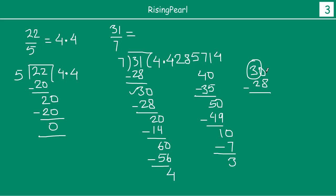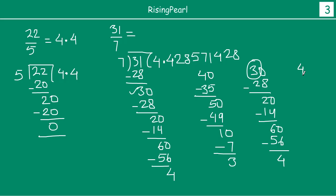So 30. Now 7 fours are 28. 30 minus 28 is 2. 0. Now 7 twos are 14. 20 minus 14 is 6. 0. 7 eights are 56. 60 minus 56 is 4. So it will be 40.